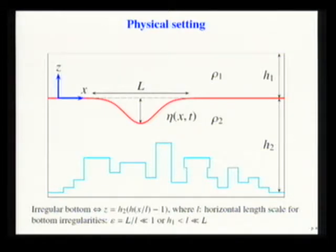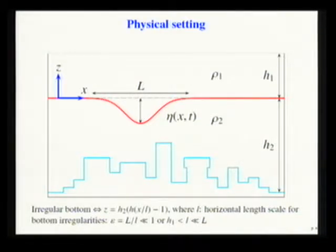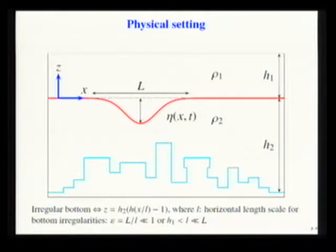We have a rigid lid at the top. The coordinate system is positioned at the unperturbed interface. We have an arbitrary topography — not necessarily smooth, not necessarily a single-valued function of X. It is a general function of X.